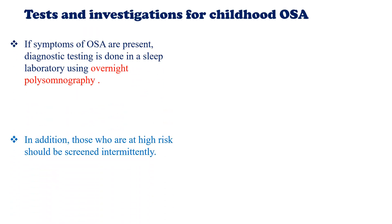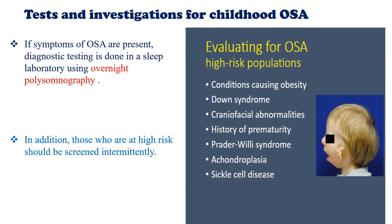If symptoms of OSA are present, diagnostic testing is done in sleep laboratories using overnight polysomnography. In addition, those who are at high risk of having OSA should be screened intermittently. High-risk populations include those with significant obesity, Down syndrome, craniofacial abnormalities, preterm prematurity, Prader-Willi syndrome, and achondroplasia, who should be checked intermittently for OSA by polysomnography despite absence of symptoms.